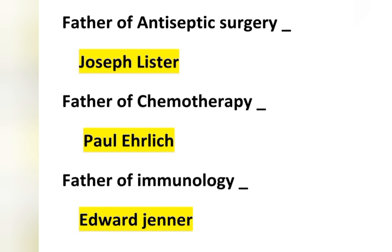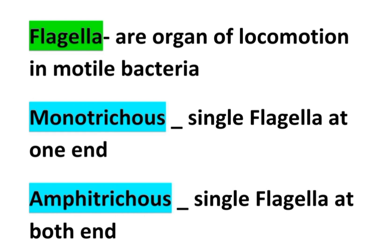Flagella are the organs of locomotion in motile bacteria. According to the arrangement of flagella, bacteria are classified into different types. Monotrichous means a single flagellum at one end. Amphitrichous means a single flagellum at both ends.